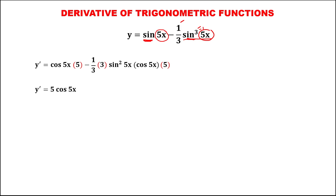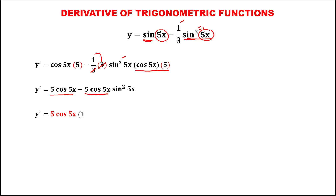Then to simplify, this becomes five cosine five x, then minus this one over three times three — cancel three, that's one — and this cosine five x times five gives five cosine five x, then times sine squared five x. Observe that there is a common factor five cosine five x, so put this five cosine five x outside. Dividing each term by five cosine five x gives one minus sine squared five x.